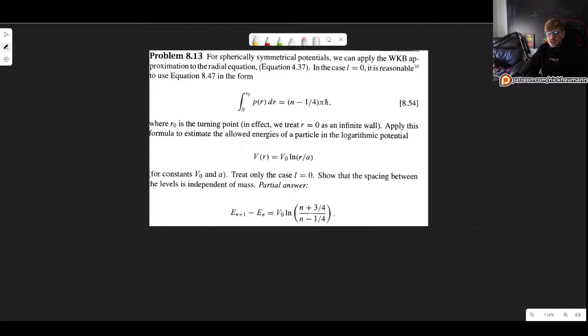For a spherically symmetrical potential we can apply the WKB approximation to the radial equation which we have seen before in the case where L equals zero. Here they state that it is reasonable to use the equation that we saw when we have a single wall, the WKB approximation when we have one vertical wall and one sloping one.